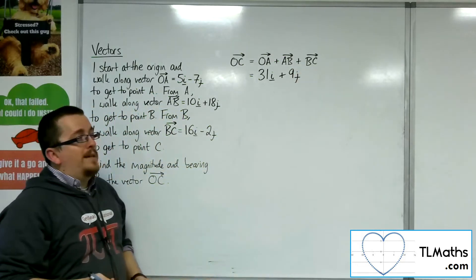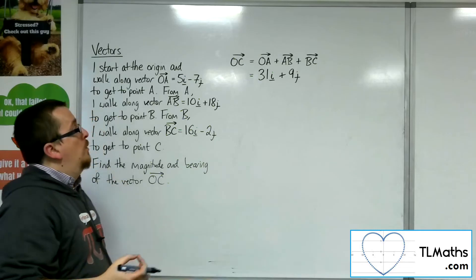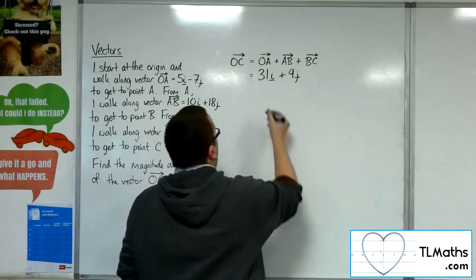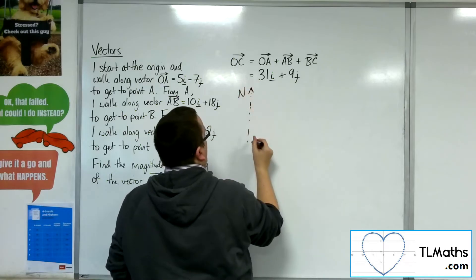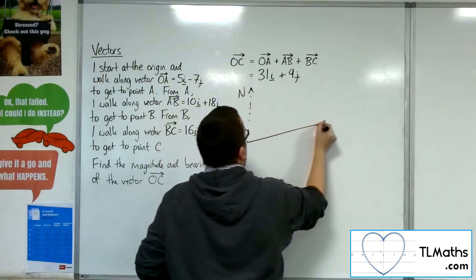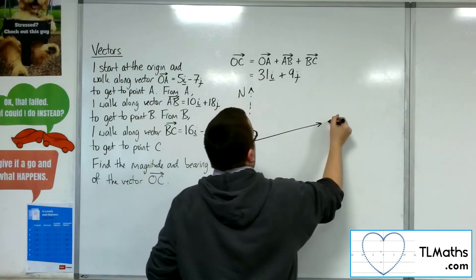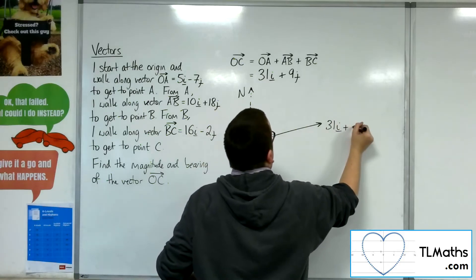So that is the vector that I would need to travel along to get directly from O to C. So if I was to draw in a north line, this vector would look something like this. So this is 31i plus 9j.